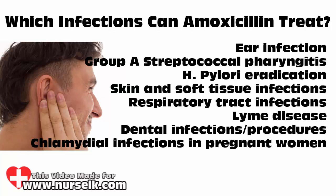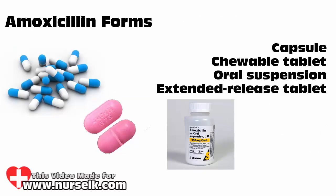Which infections can amoxicillin treat? Amoxicillin is used alone or in combination for a variety of bacterial infections such as ear infections, group A streptococcal pharyngitis, H. pylori eradication, skin and soft tissue infections, respiratory tract infections, Lyme disease, dental infections and procedures, and chlamydia infections in pregnant women.